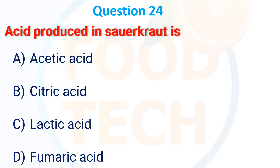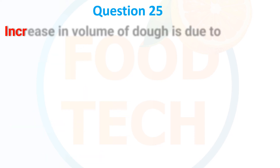Next MCQ: The acid produced in sauerkraut is which acid? Options: (A) Acetic acid, (B) Citric acid, (C) Lactic acid, (D) Fumaric acid. The correct answer is C — lactic acid.